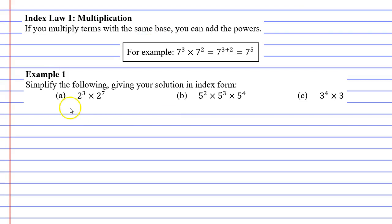Let's use this to simplify questions in example 1. Notice that it wants you to give your solution in index form. So we're not solving it, we're just simplifying it. So question A, we've got a power of 3 and a power of 7. So we add these powers up, and 3 plus 7 is 10. So the base stays the same, we add the powers.